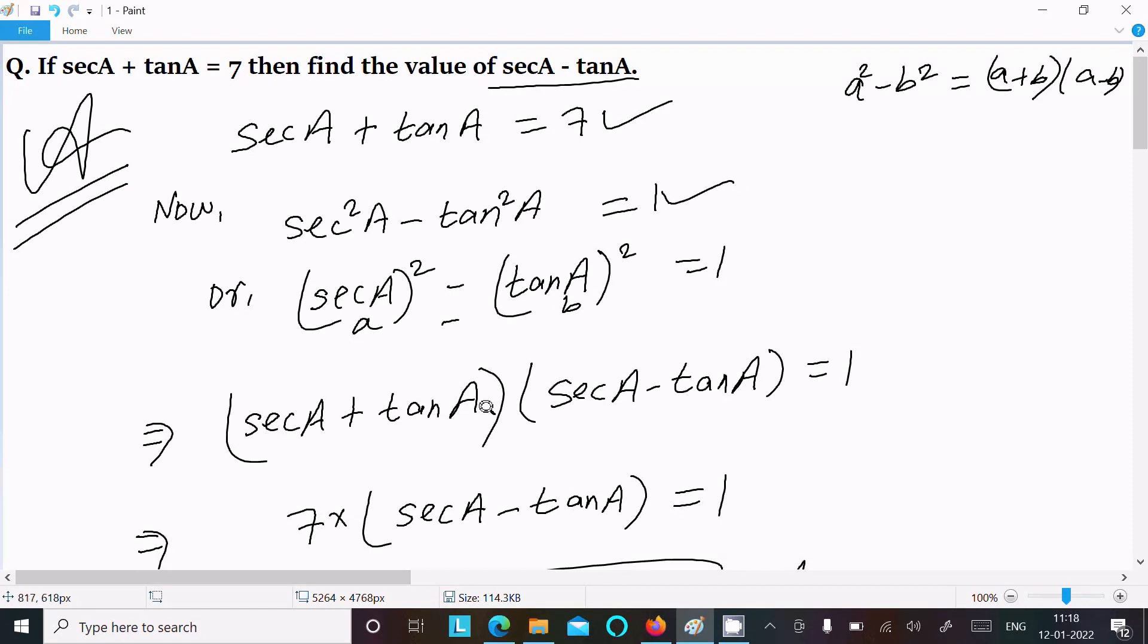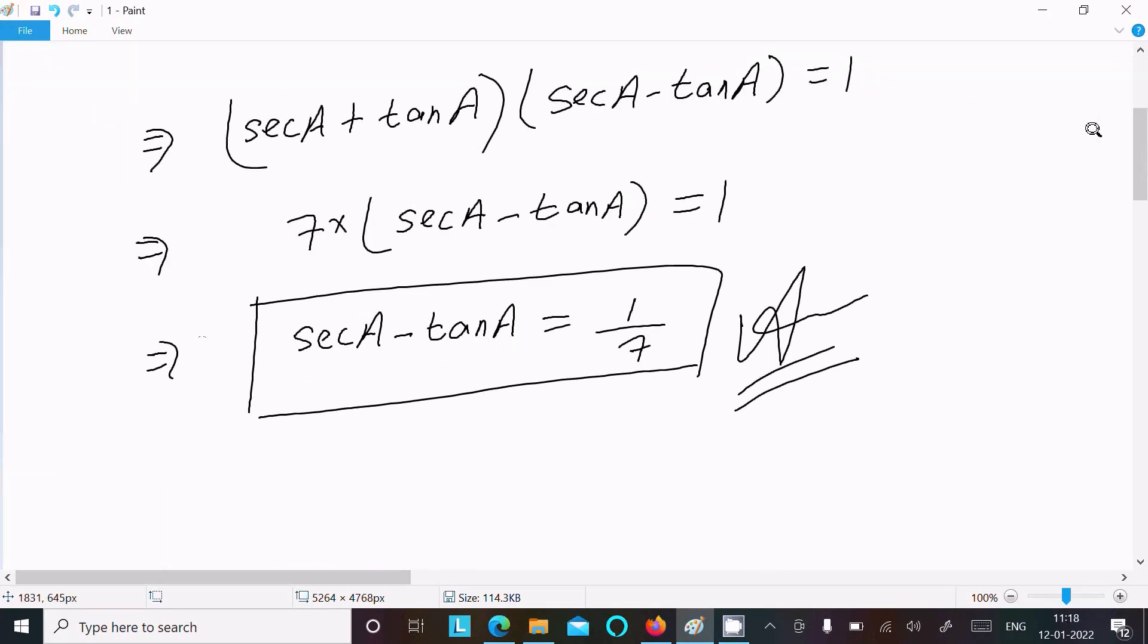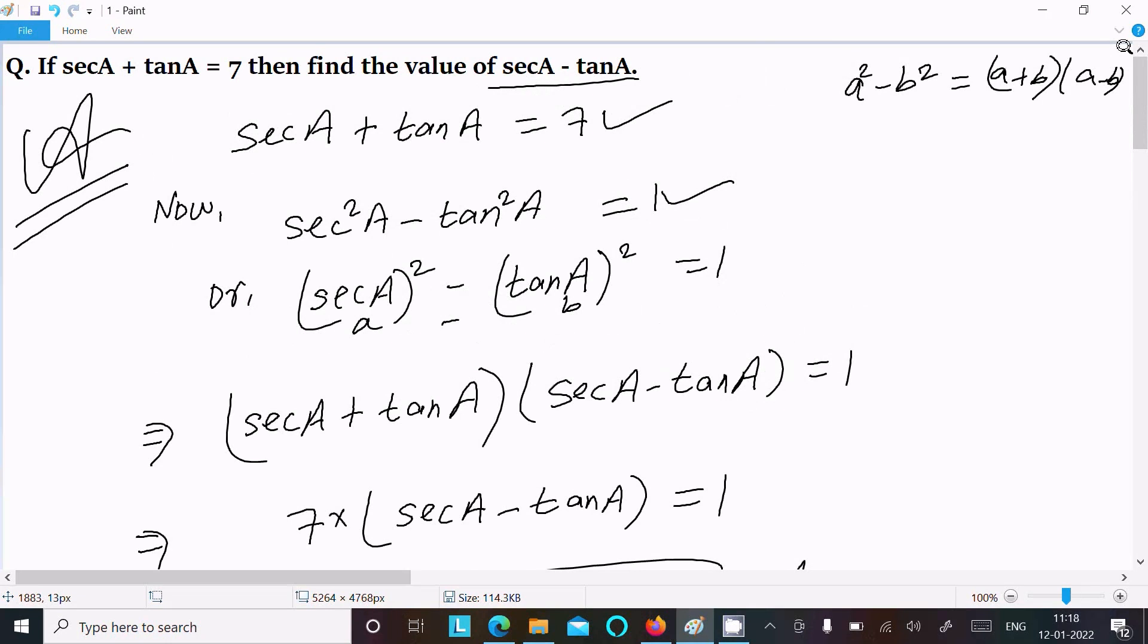And put the value secA plus tanA, now you can get secA minus tanA. So this is the way we can find the value. So now this video is over, thanks for watching, see you next video, thank you.